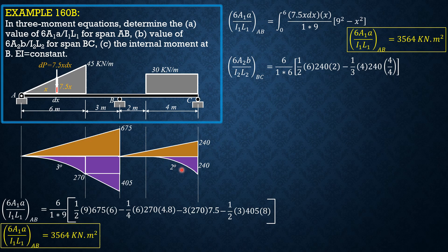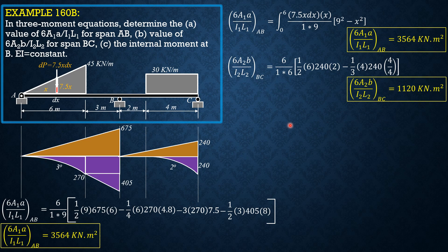Then, minus area of parabola, 1 third of 4 times 240, this distance is 4 over second degree plus 2, so 4 over 4 or 1. So, 1 third of 4 times 240 times 1. So, evaluating 6 area 2B over I2L2 for BC is equal to 1,120 kilonewton meter square.